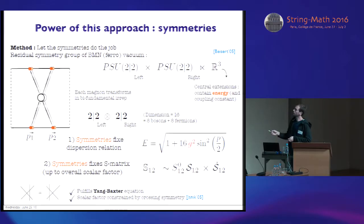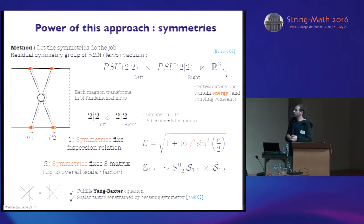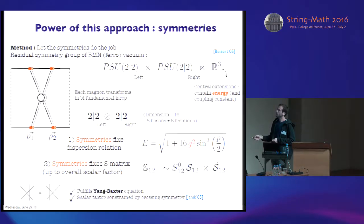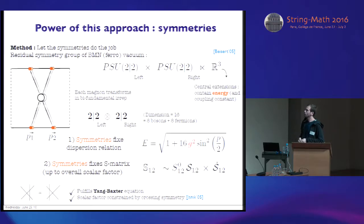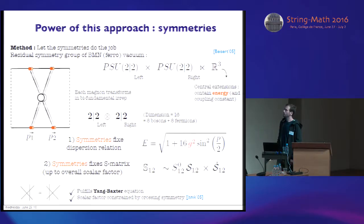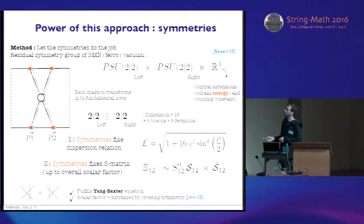Each one of these factors rotates one part of this magnon. What is important about this algebra is this central extension here, which actually includes in particular the energy of the system, and this intimate connection between the symmetry or the supersymmetry of the problem and the energy that appears as a central extension allows one to exactly determine the energy of the magnon as a function of the coupling. The reason behind that is that this representation should be short at any value of the coupling, and this puts some constraint on the central charge that must satisfy some quadratic equation of sort, which just translates into this nice relationship.